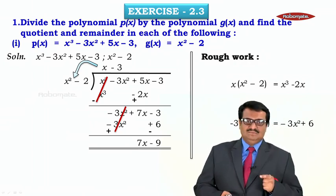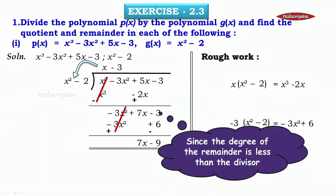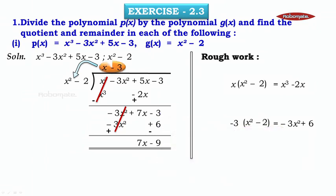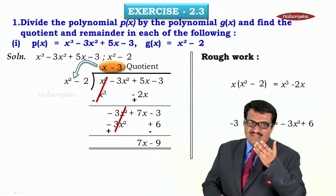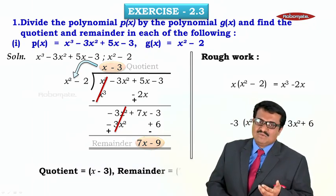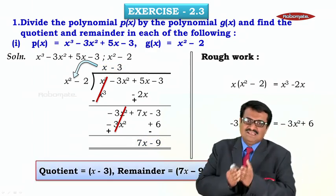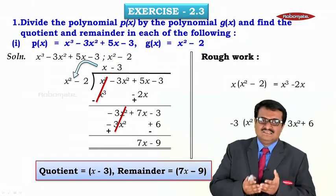On subtraction, signs change: −3x² + 3x² cancels, 7x is carried down as is, and −3 − 6 = −9. Now we observe that the degree of the remainder 7x − 9 is 1, which is less than the degree of the divisor x² − 2, which is 2. Since the degree of the remainder is less than the degree of the divisor, we stop the division. Therefore, the quotient is x − 3 and the remainder is 7x − 9.